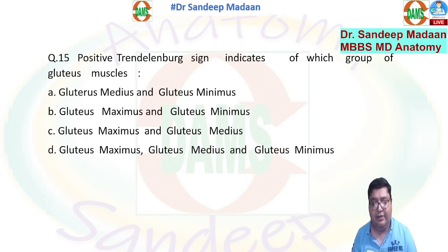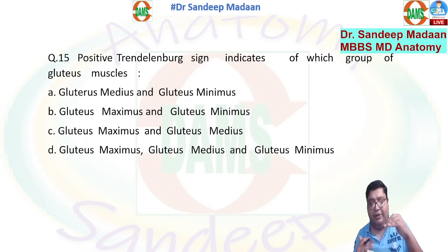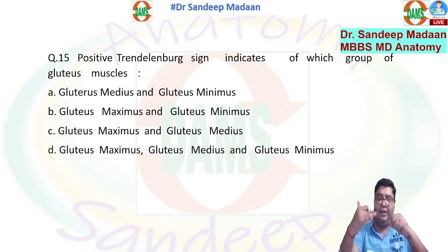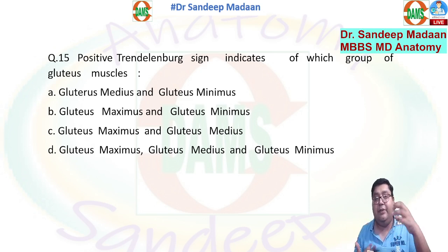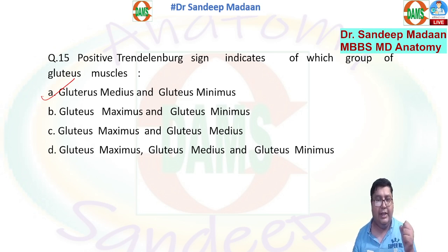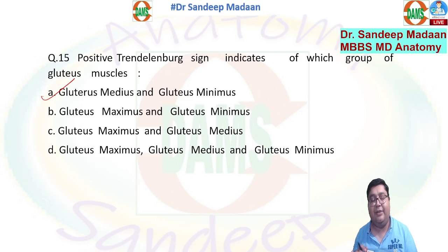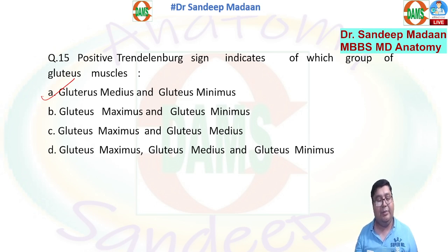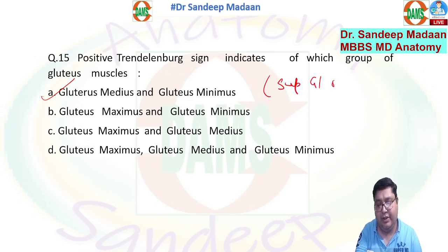Positive Trendelenburg sign: when a person lifts the right foot off the ground, there is no support on the right side, so the right pelvis should tilt due to gravity. The left-sided muscles — gluteus medius and gluteus minimus — contract to prevent the tilt. If the tilt is observed on the right side, the weakness is in the left-sided muscles. The nerve involved is the superior gluteal nerve, which supplies both gluteus medius and minimus.